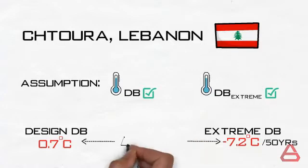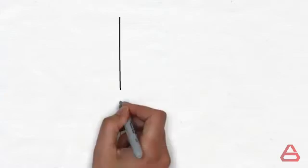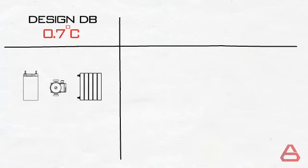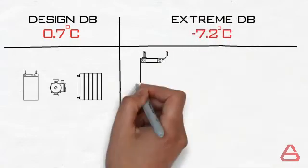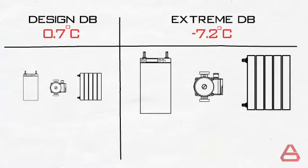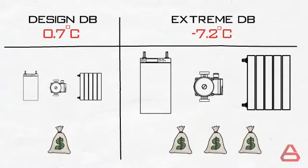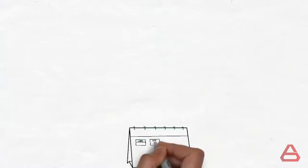This is a humongous difference, a delta T of about 8 degrees. At a design of 0.7 degrees Celsius, the heating system you would have installed and operated would have to be doubled in case of design temperature of minus 7.2 or even more. And the larger system means higher initial and operational costs. But all of this is for what? The minus 7.2 degrees Celsius mentioned is likely to happen every 50 years.